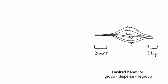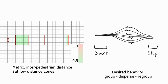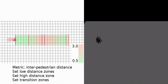In our first example, we want to control the size of a group of agents. We want them to start out grouped, then disperse, and then regroup. We can do this by using the interpedestrian distance metric. First we set zones with a low distance between agents, then the zone where this distance should be highest, and then the zones which will serve as transitions. Note that the 3D animation on the right was rendered using the Golem Crowd plugin for Maya.